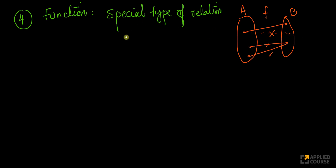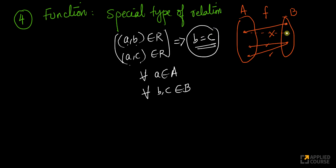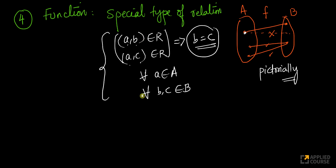Mathematically, a function is a special type of relation where if (A, B) belongs to the relation and (A, C) also belongs to the relation, then B must equal C — for all A in set A and for all B, C in set B. In other words, if A maps to B and A maps to C, then B and C cannot be two distinct elements; they have to be the same. So an element of set A cannot map to two distinct elements.